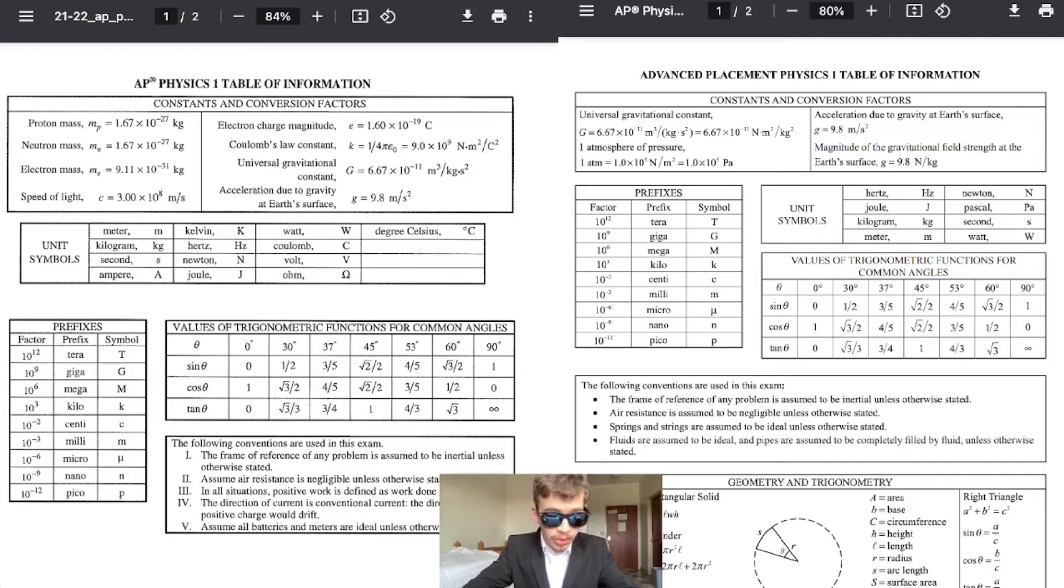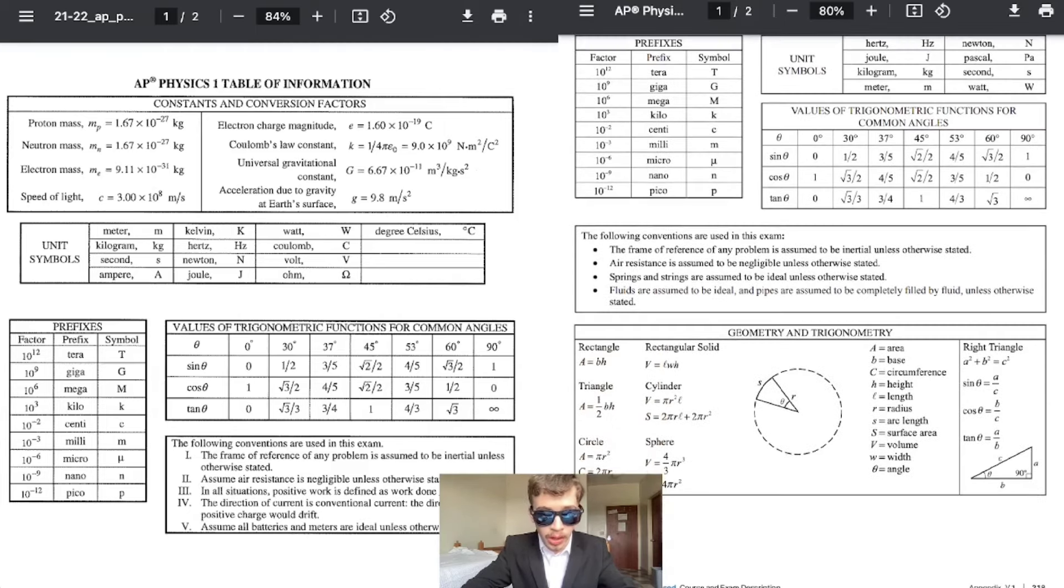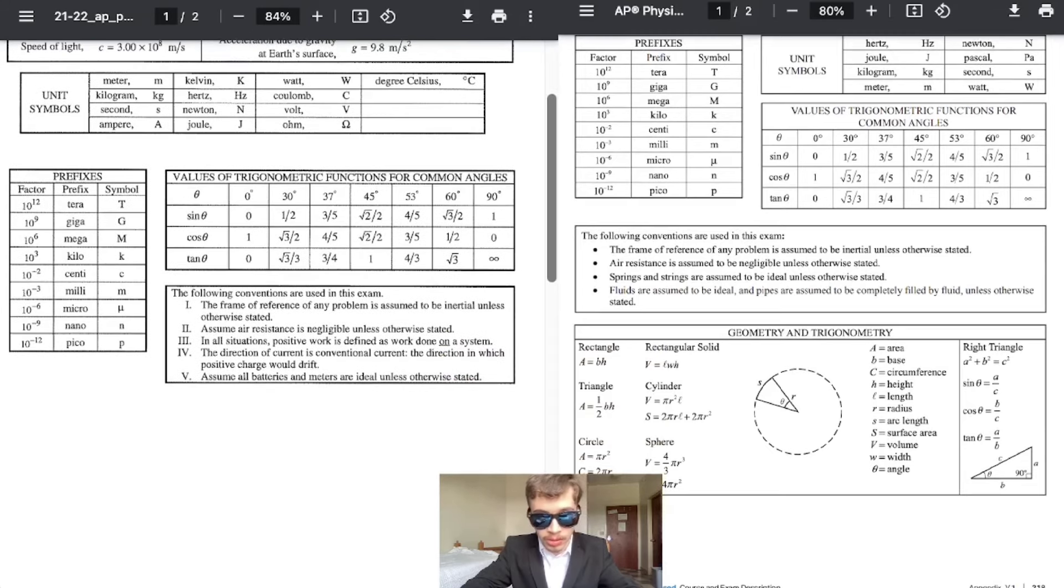The prefixes are still there, very convenient in terms of dimensional analysis and whatnot. Unit symbols, they have removed ohms and stuff like that. That includes electricity and magnetism, which is not something you should be concerned in AP Physics 1 at all. You still got your trig values. Following assumptions, conventions, the battery part is gone because, well, you're not working with batteries. Direction of current is conventional current. Well, you're not working with currents. So they did clean it up a little bit to make it more relevant to the exam, which is nice.